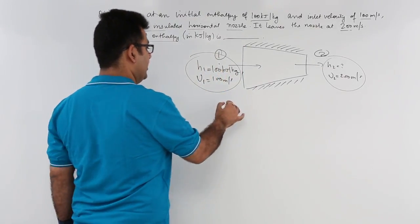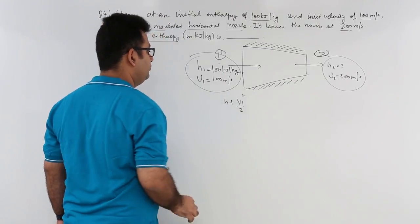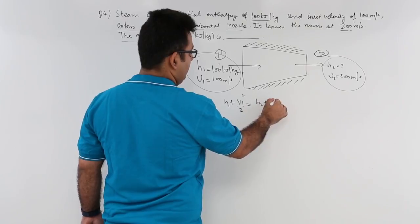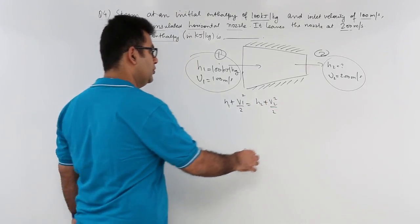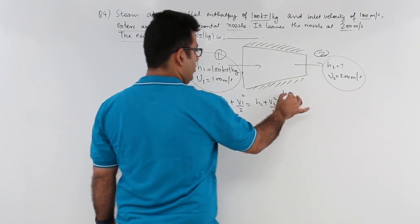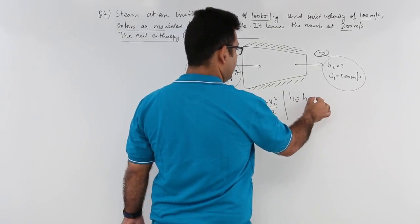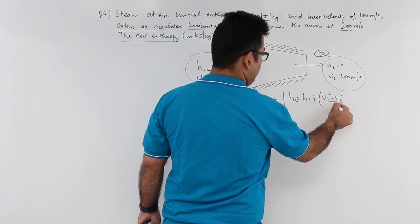So on this side you have H1 plus V1 square by 2 is equal to H2 plus V2 square by 2. So H2 would be equal to H1 plus V1 square minus V2 square by 2.